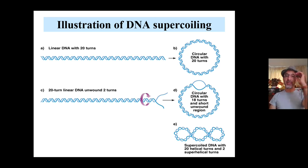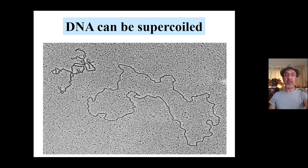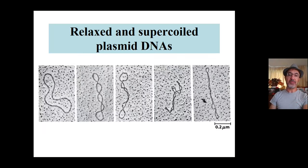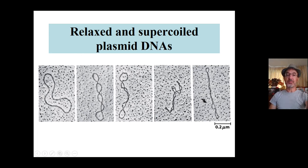I'll show you a very beautiful electron micrograph showing DNA as relaxed and supercoiled. This is the same DNA molecule on this electron micrograph. To the left, you have the supercoiled, which is the densely packed, compact structure, and to the right the one that is relaxed. In another micrograph, to the left you have the only relaxed molecule, and then you have increasing supercoiling from left to right — the degree of supercoiling increases from left to right.